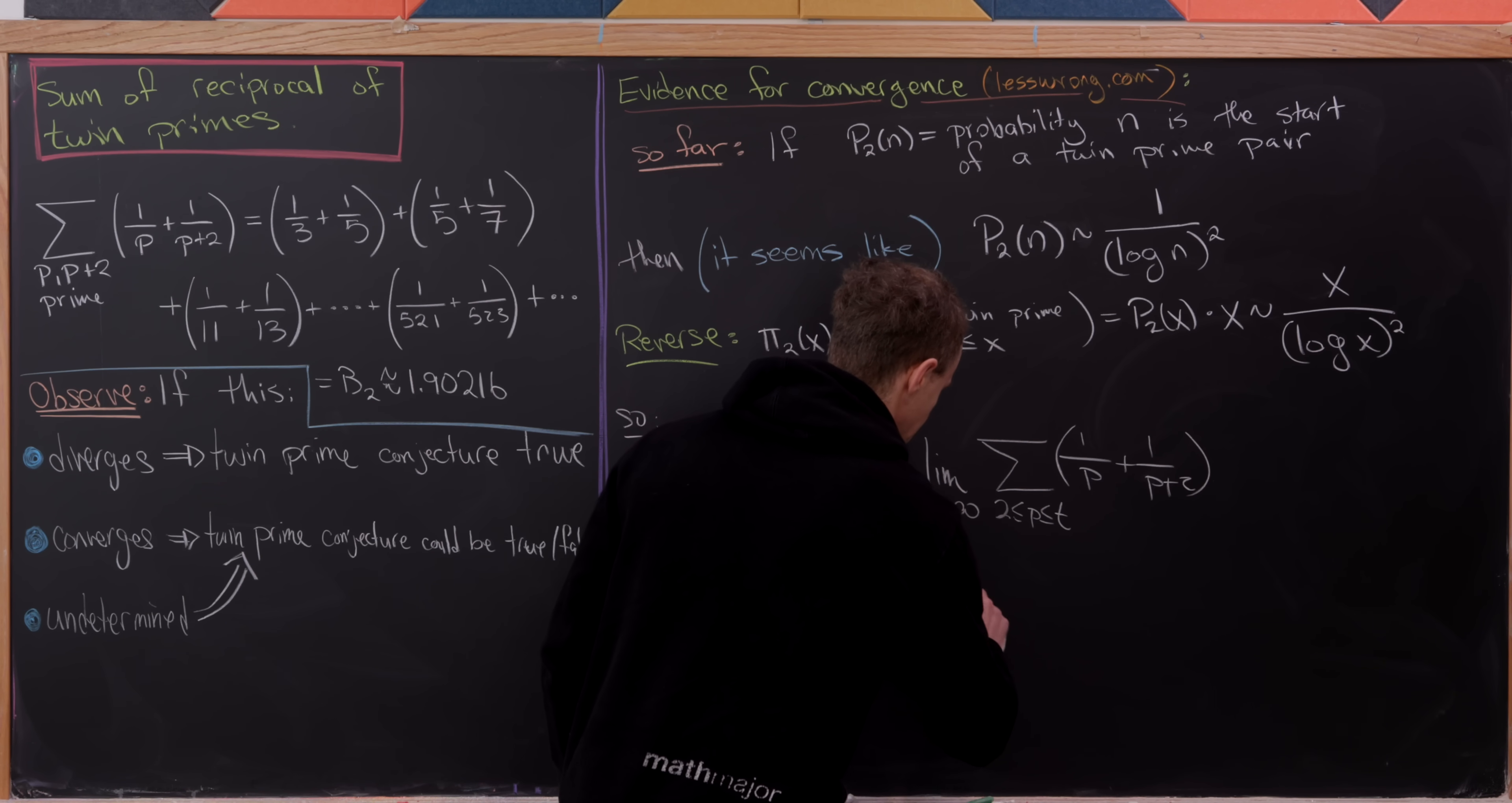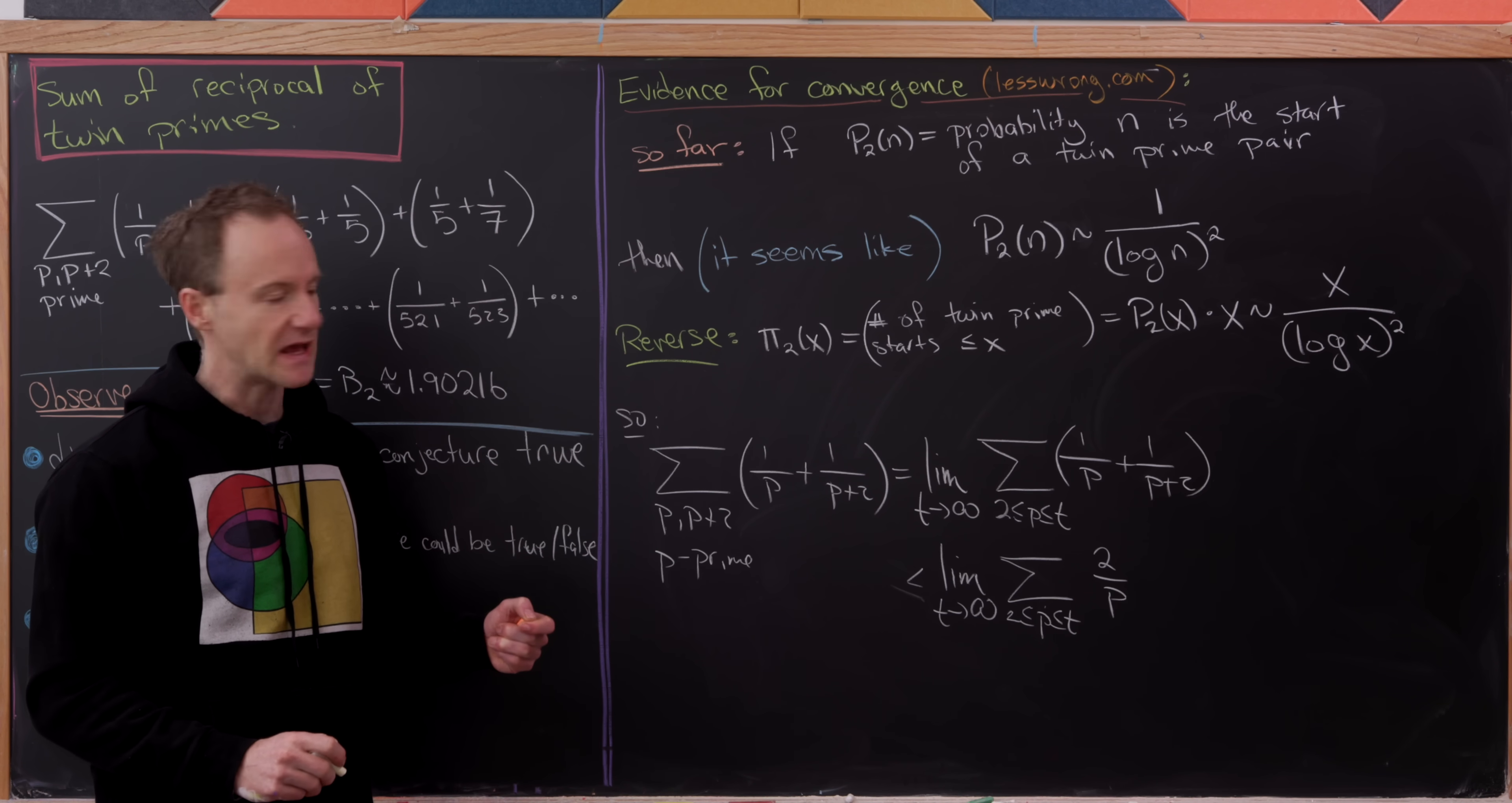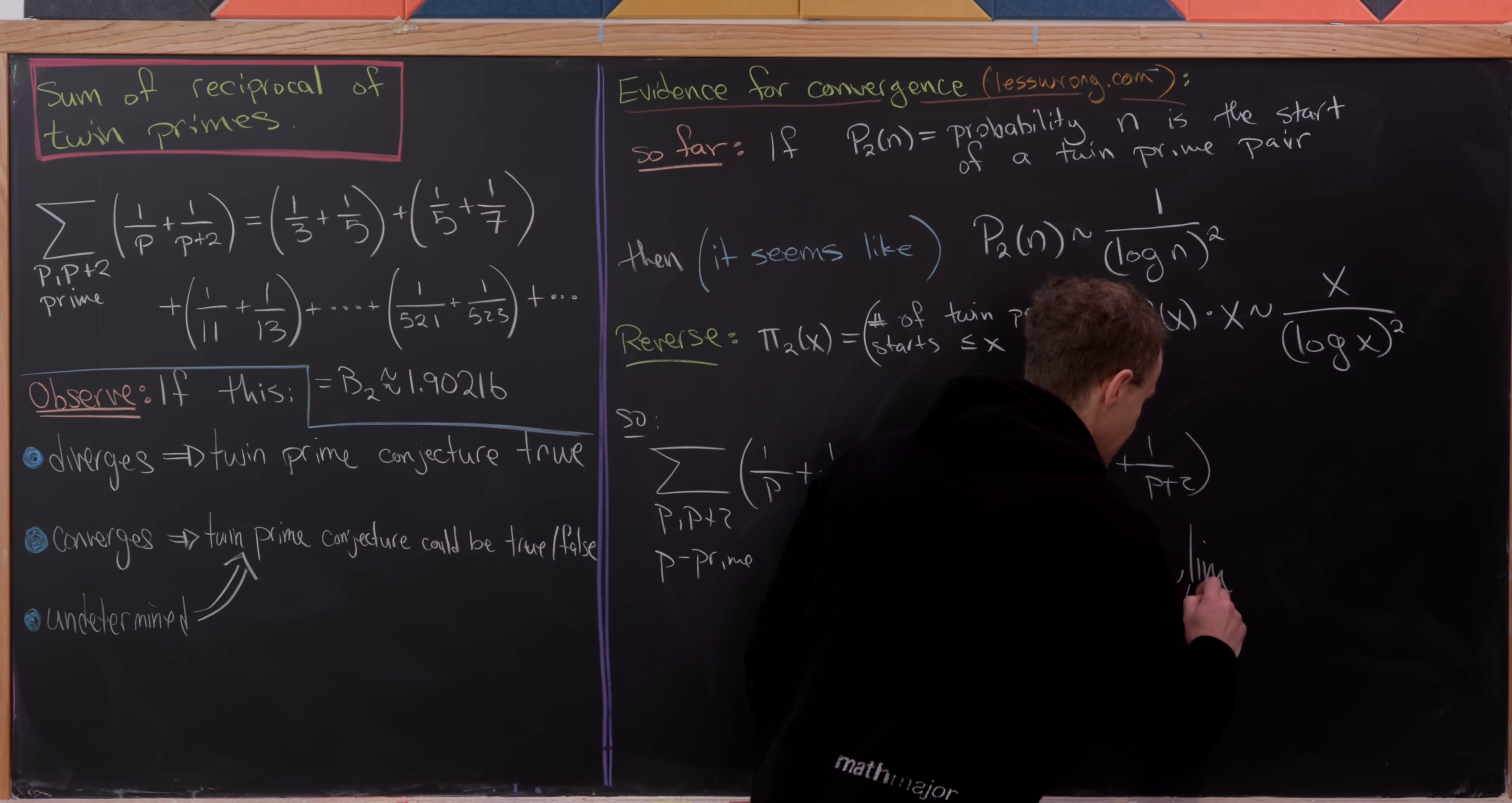But now observe that that is less than or equal to, or actually strictly less than, the limit as t goes to infinity of this same sum that we had in the step above, but we have a 2 over p here. So what I did is I just replaced 1 over p plus 2 with 1 over p, but 1 over p is larger than 1 over p plus 2. So when we add them together, we pick up this inequality.